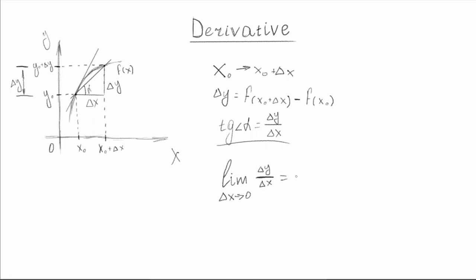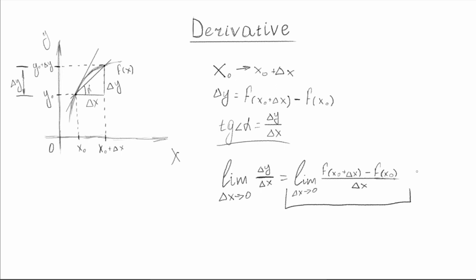That limit equals delta y divided by delta x. And essentially this limit — we can just call it the derivative. So it'll be something like this, and we can just call this limit the derivative.